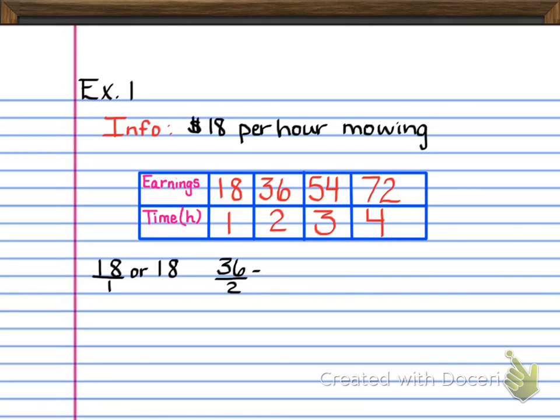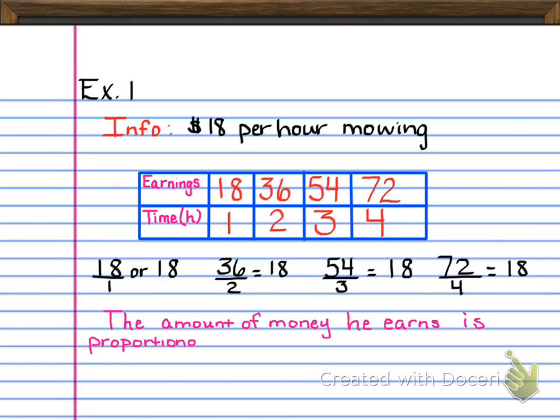Now we're going to set each one of these up as a ratio and then reduce it. And as you can see here, 36 over 2 would give us 18, 54 over 3 is 18, and 72 over 4 is 18. So the answer to our problem, the explain portion, which is going to be very important because this is the part that a lot of you like to skip.